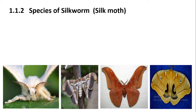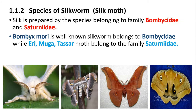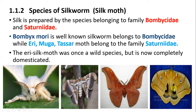Hello students and welcome. I am Jyothi Rajput and today our topic is species of silk moth. The silk-producing moth species belong to the family Bombycidae and Saturniidae. As you can see in this picture, Bombyx mori belongs to the family Bombycidae, and the rest — Eri, Muga, and Tassar — belong to the family Saturniidae. The Eri silk moth was once a wild species but is now completely domesticated.